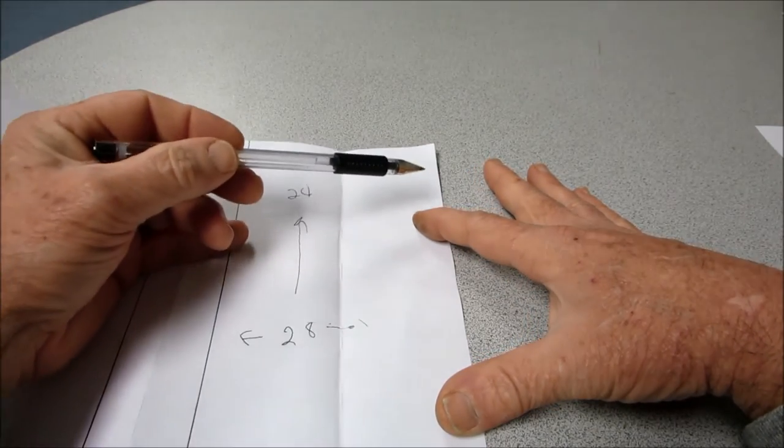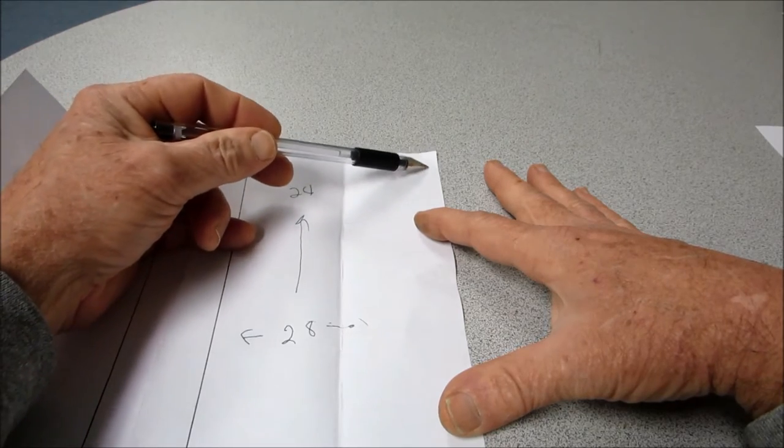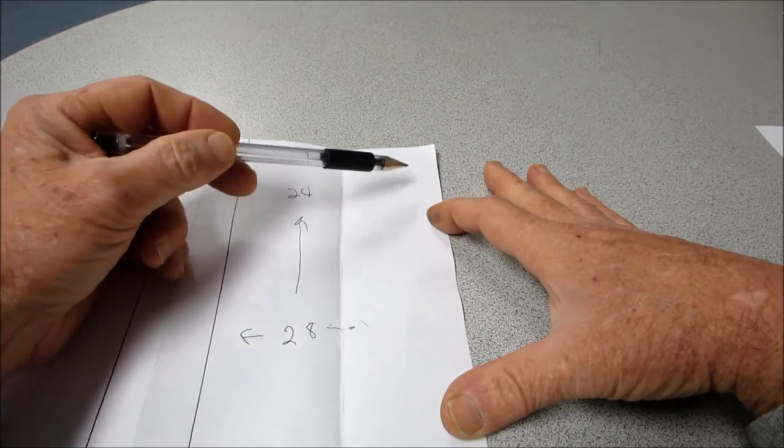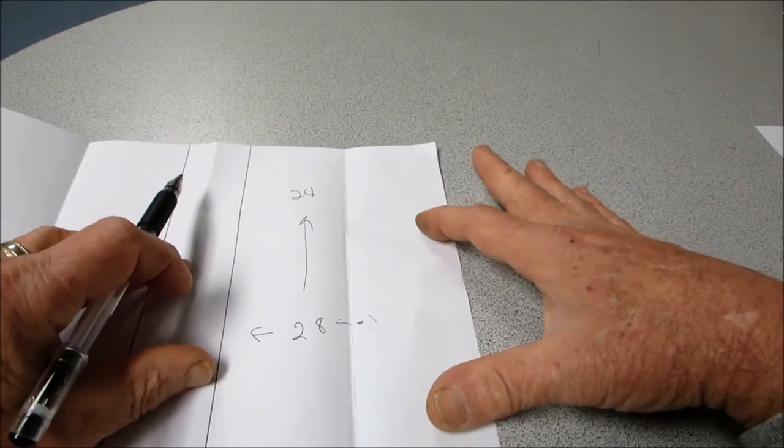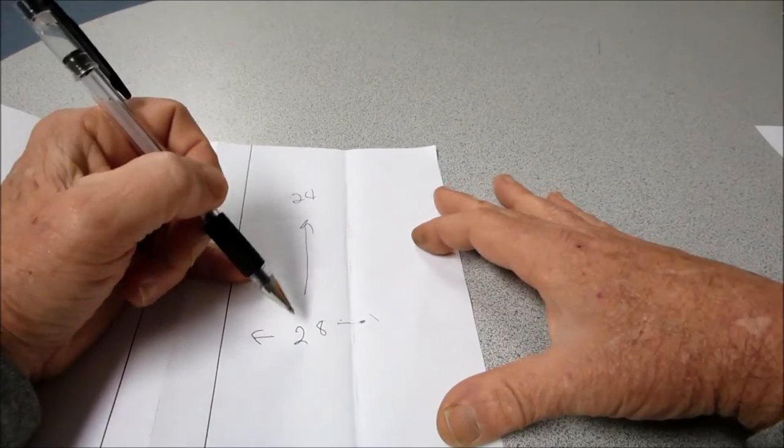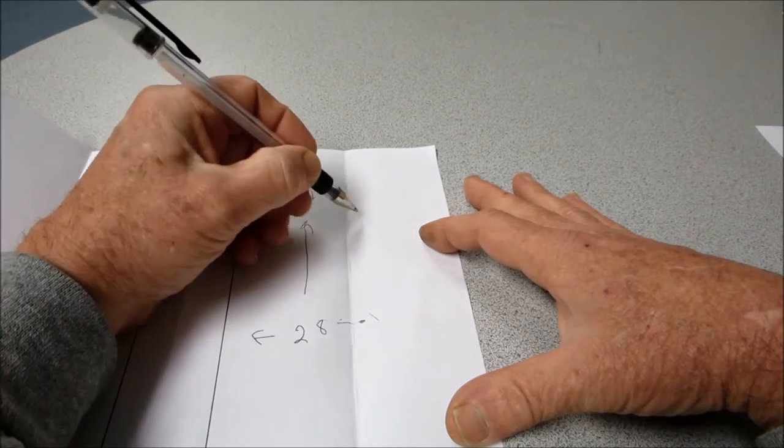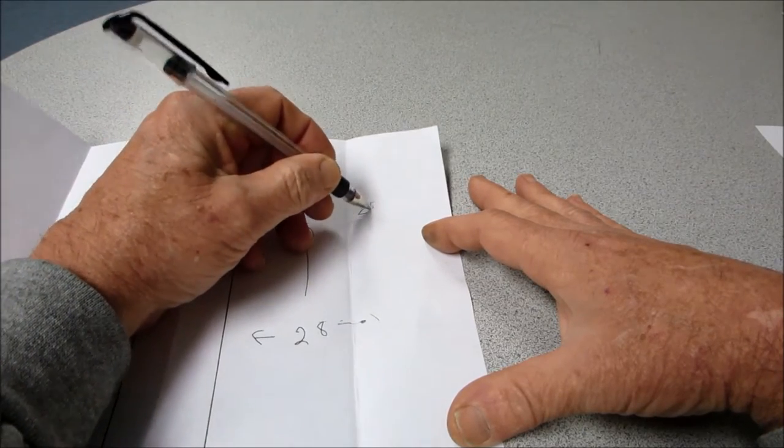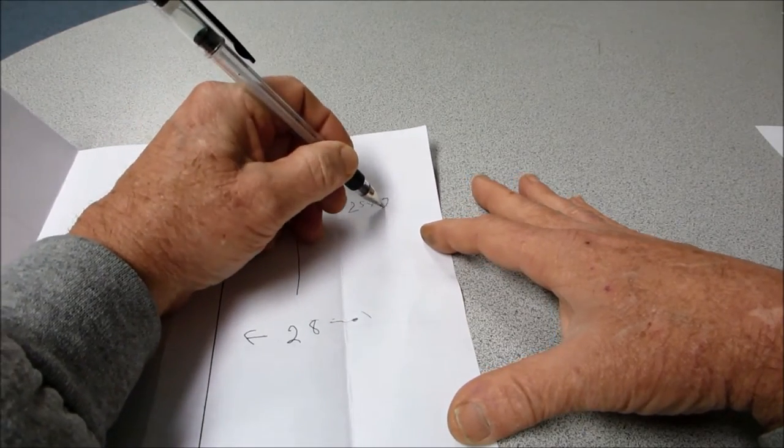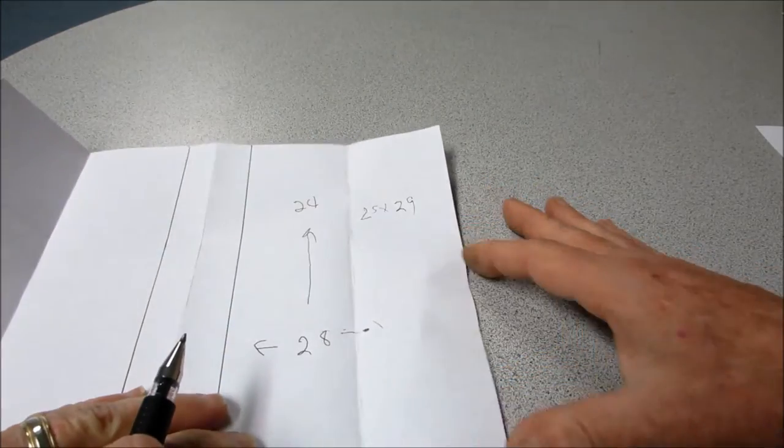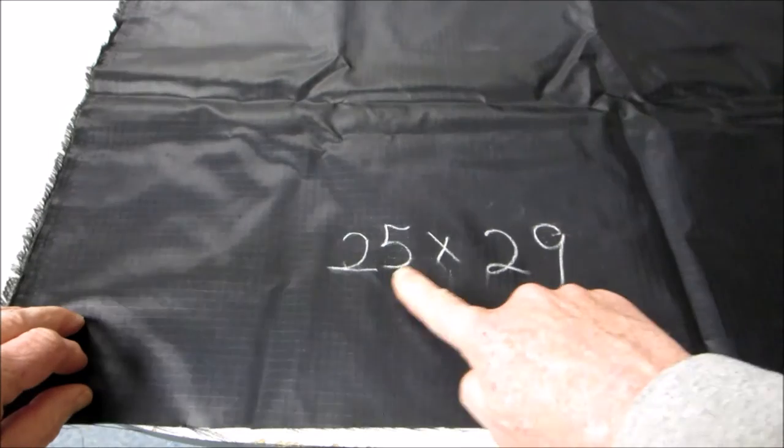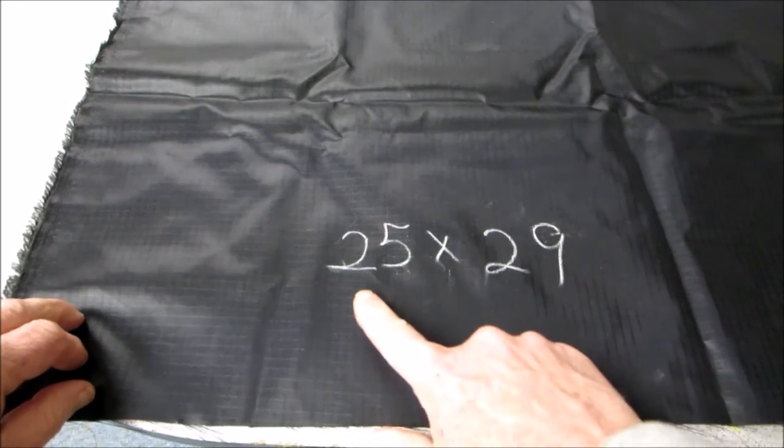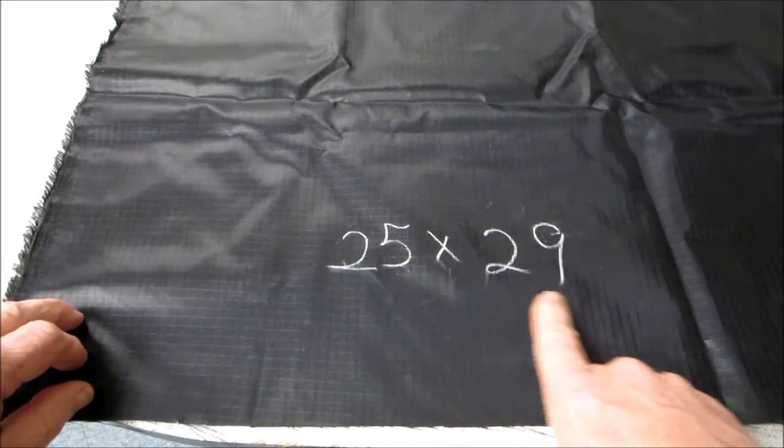But of course, we're going to have an allowance around the perimeter of about an inch to allow us to do our rolled hem. So instead of 28 by 24, we'll make this 25 by 29. I've got a piece of our ripstop nylon cut into a rectangle of approximately 25 inches by 29 inches.